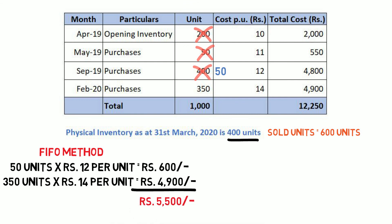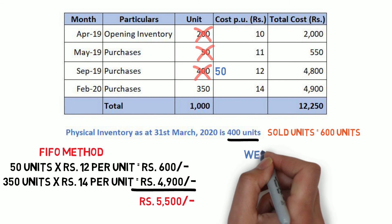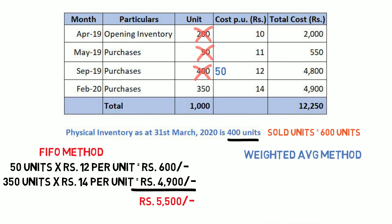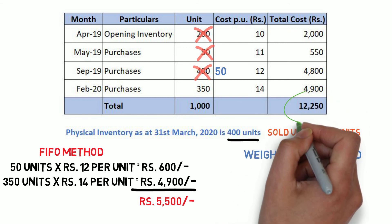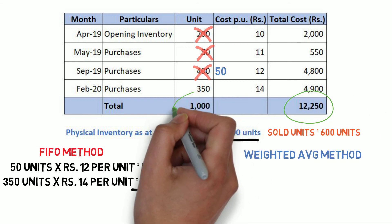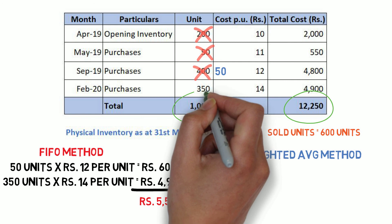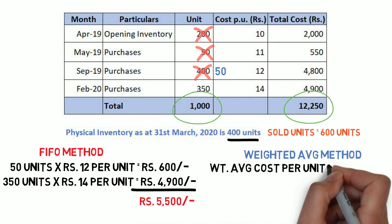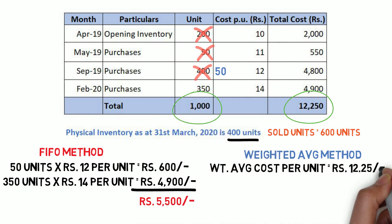Under the weighted average method, we first compute the weighted average cost per unit, which is calculated by dividing the total cost by total units. Once we have that, the closing stock is valued by multiplying the closing inventory by the weighted average cost per unit.